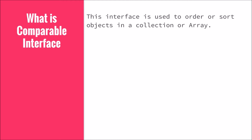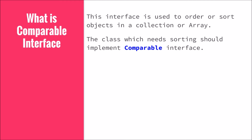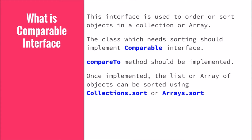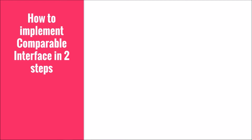If you want to rearrange objects in a particular sequence, you can use the Comparable interface. To use it, there are two steps. First, you need to implement the Comparable interface. Then there is a method called compareTo in the Comparable interface which should be implemented by the class. Once you have implemented this compareTo method, you can call Collections.sort or Arrays.sort to sort the objects within the collection or array.